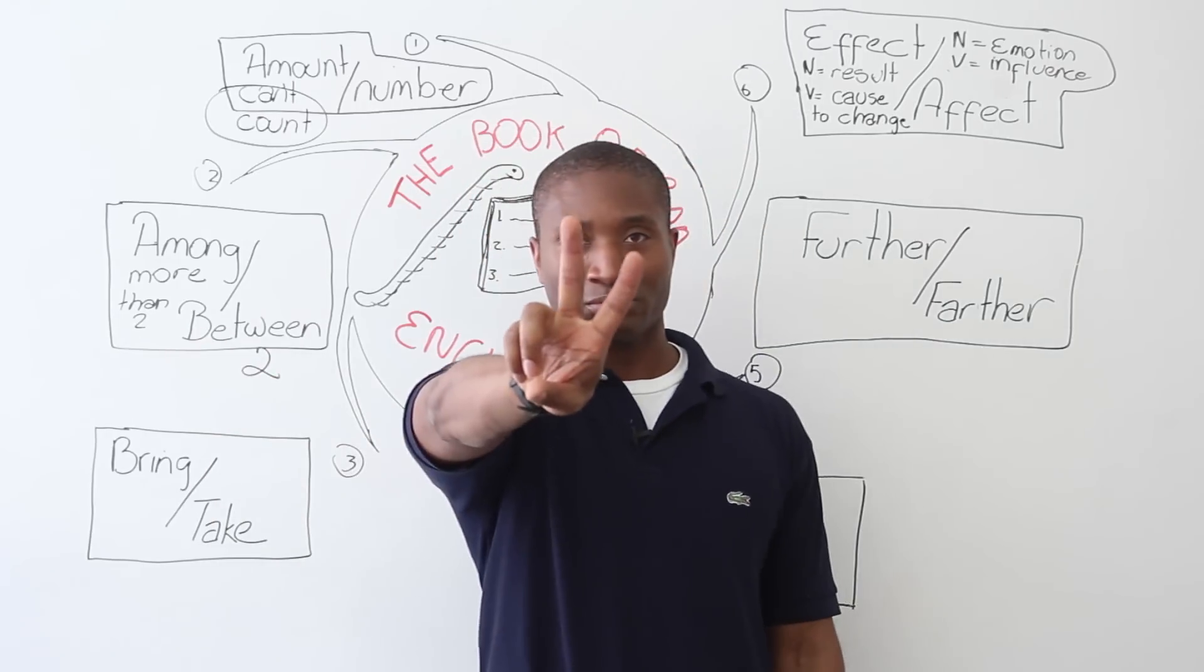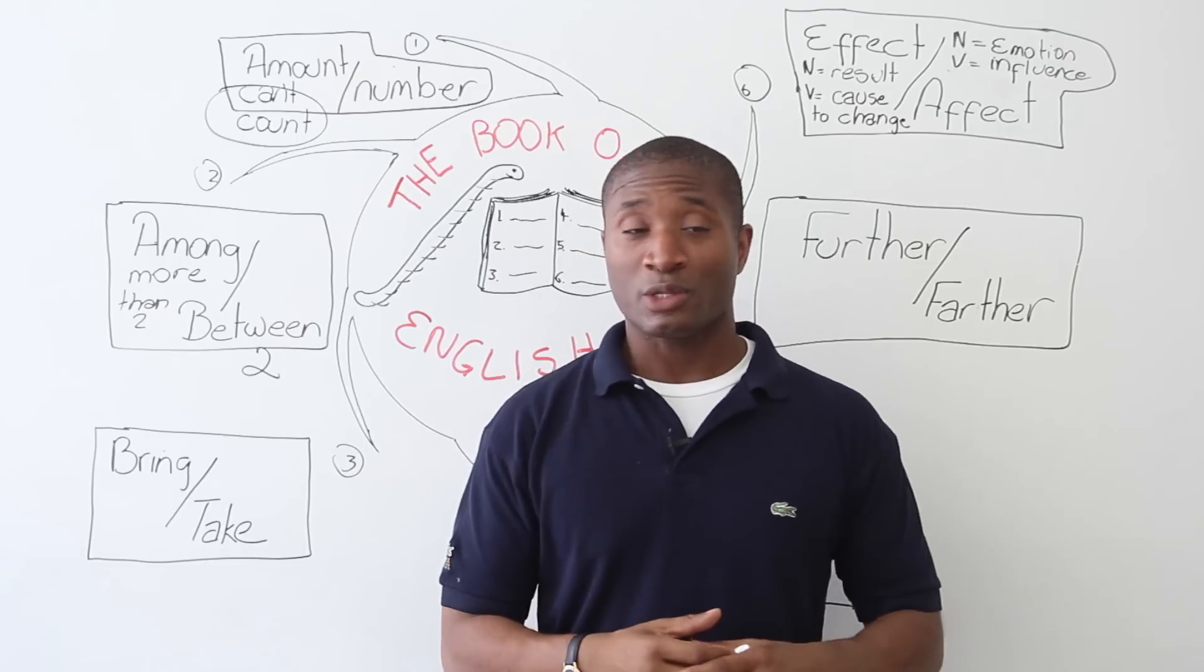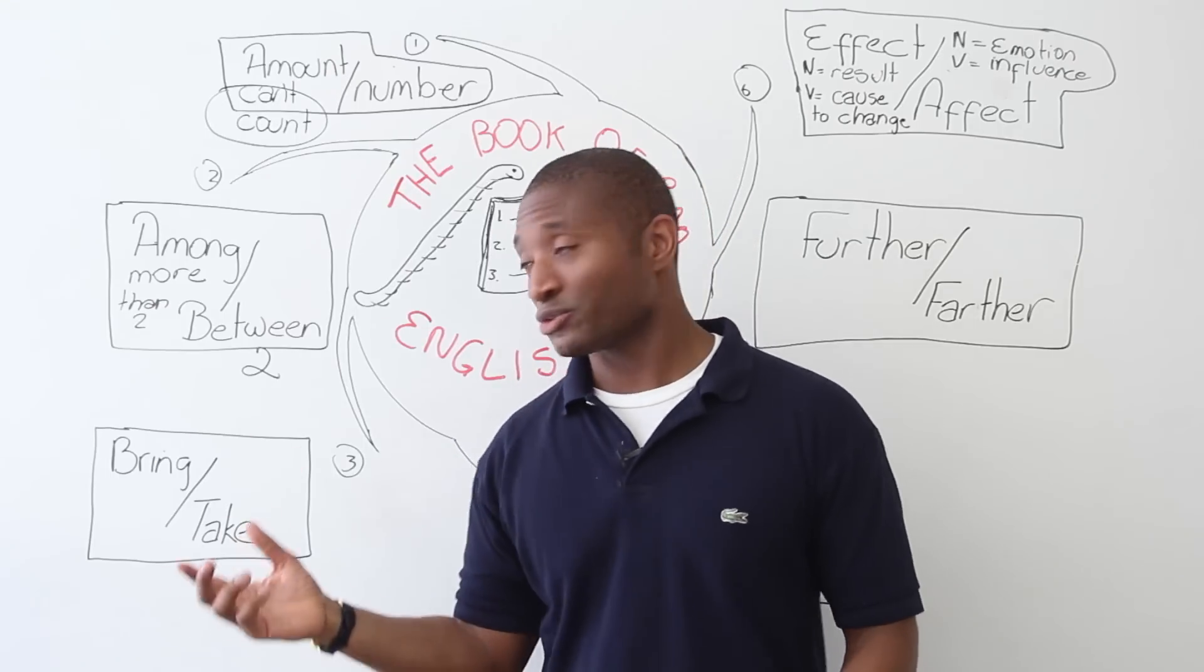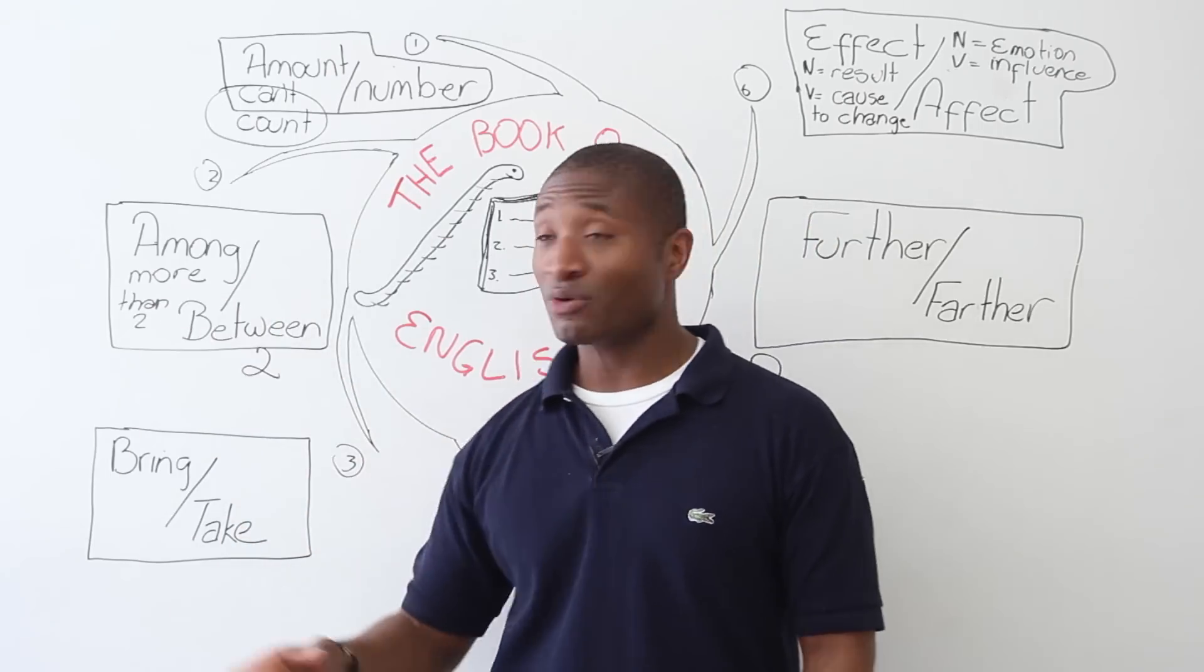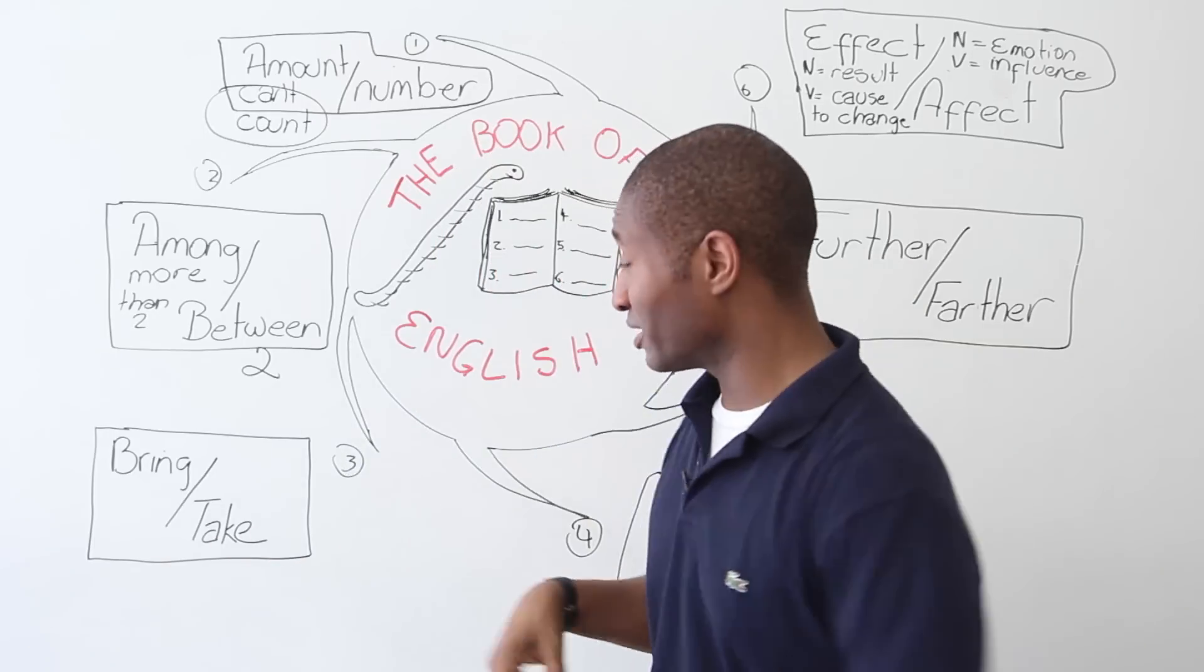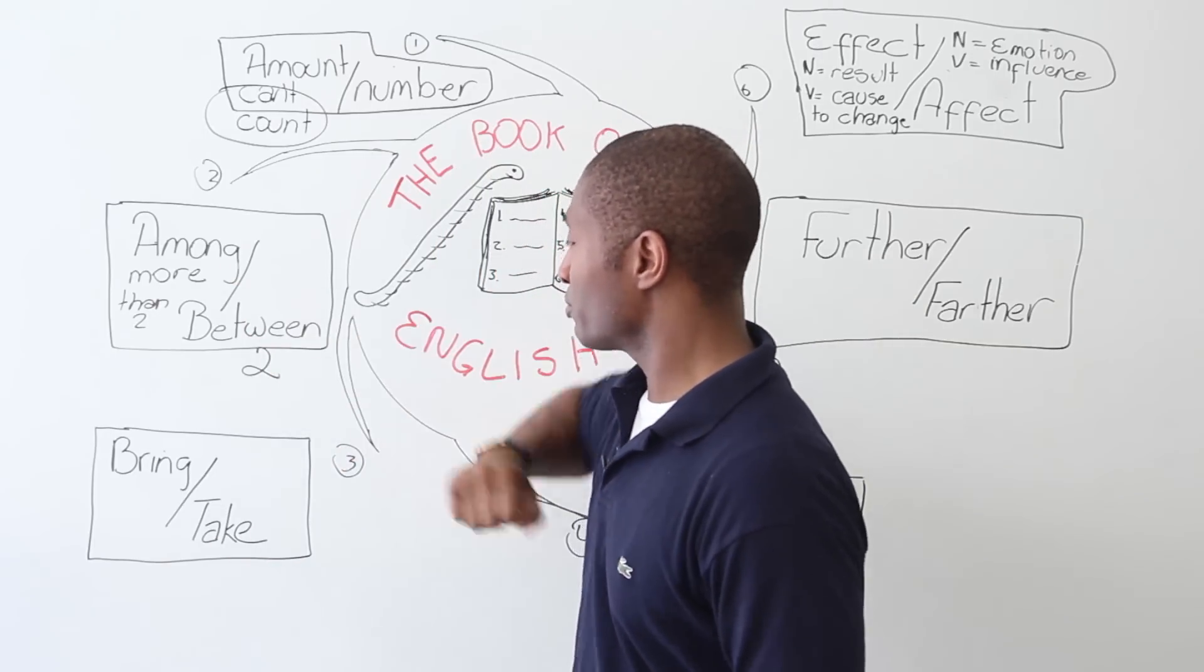So between is usually two, right? It could be two groups. There was a fight between this country and that country, right? Because it's two groups. But among is for more than two. Cool? All right. So among, more than two, between two.